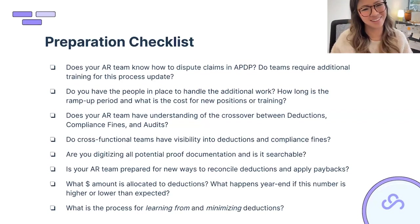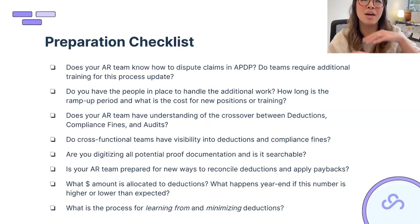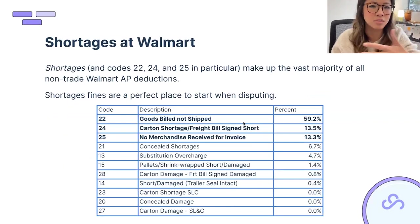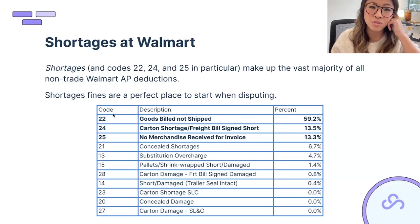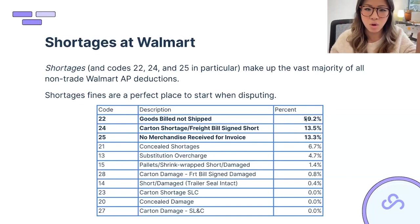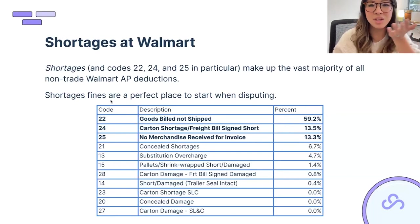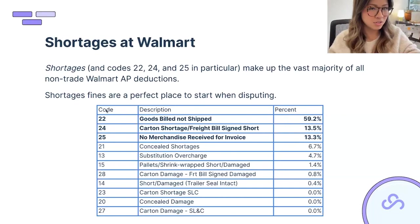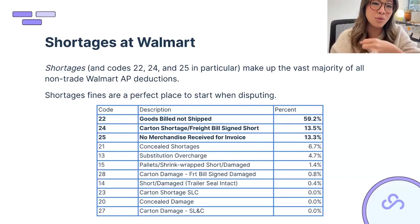Is that one person also handling Target, Kroger, and Amazon? Do they have to close books and also fight deductions? Think about what time you need to dedicate to this and whether you have the resources. A key insight from our data: Codes 22, 24, and 25 — all shortage-related — usually make up the vast majority of dollars and claim count for suppliers shipping to Walmart. If you're getting thousands of deductions a month and don't know where to start, start with shortages.